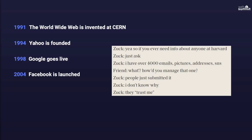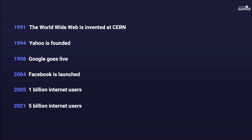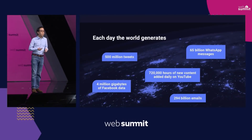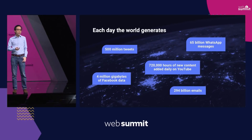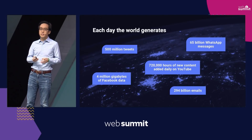While this was happening in the background, the internet continued to grow. In 2005, we hit 1 billion internet users. And this year, there are now 5 billion users online around the world. What does it mean to have 5 billion internet users? The numbers are pretty staggering. Today, there are 500 million tweets created every single day, 294 billion emails, 4 million gigabytes of Facebook data, and 65 billion WhatsApp messages.